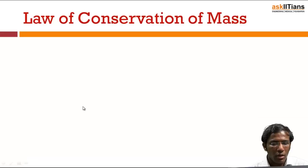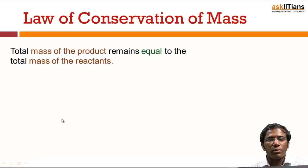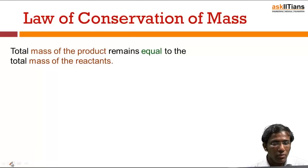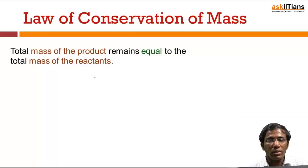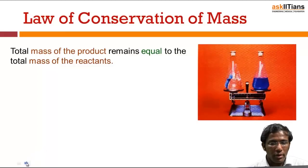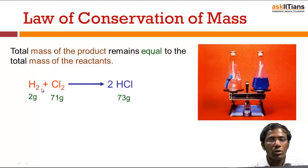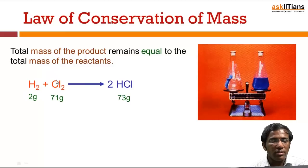The law of conservation of mass says that the total mass of the products remains equal to the total mass of the reactants. Mass is neither created nor destroyed. So the total mass of the products should always be equal to the total mass of the reactants. For example, if we take hydrogen and chlorine reacting together to form hydrogen chloride, we calculate the total mass of reactants and products and those two will be equal.